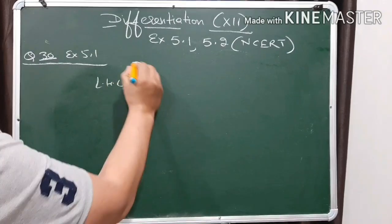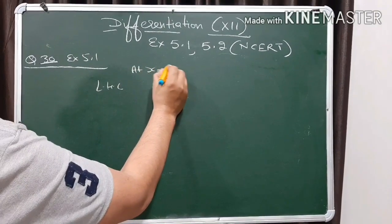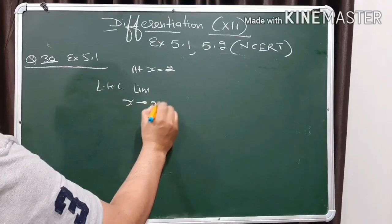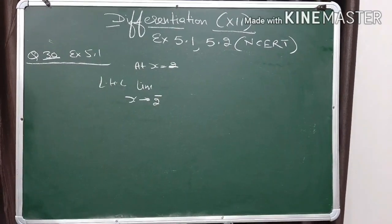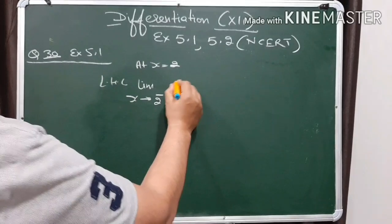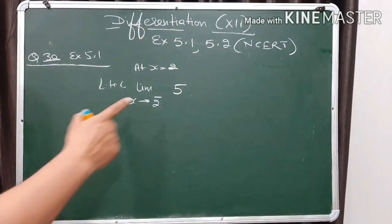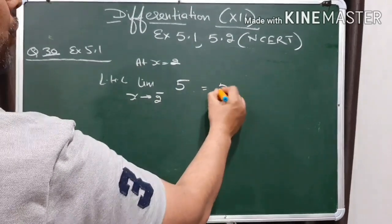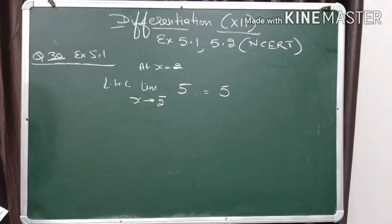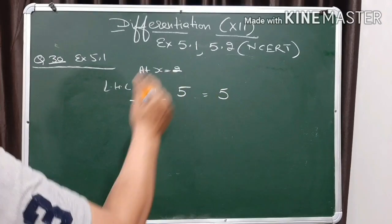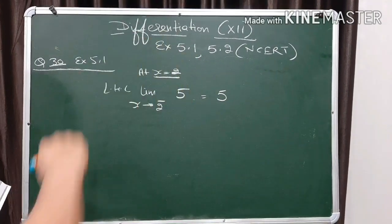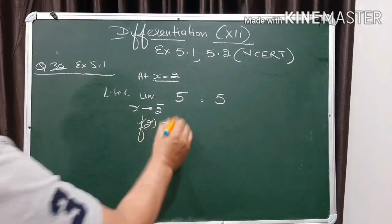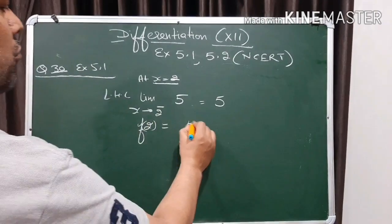Left hand limit at x equals 2. For the left hand limit, as x approaches 2 negative, the function is 5. A constant function has no variable, so the limit does not change it — the answer remains 5. At f of 2, the function value is also 5.